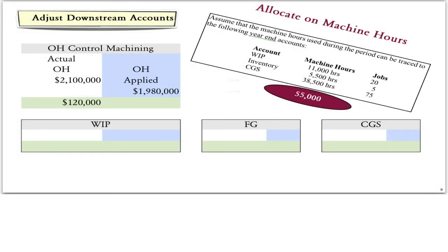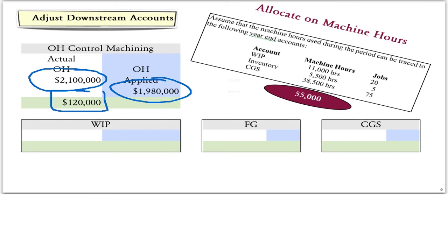In this example, we'll assume that the actual overhead costs were $2,100,000 and that the amount of overhead applied during the period was $1,980,000. This leaves us with a debit balance of $120,000, which for the sake of the example we will assume is material. When we have a material balance in the account, rather than closing it to cost of goods sold, we want to allocate the $120,000 against the various downstream accounts — work in process, finished goods, and cost of goods sold. For example, say the overhead was originally allocated on the basis of machine hours; one way of closing the $120,000 would be to prorate it based on machine hours.